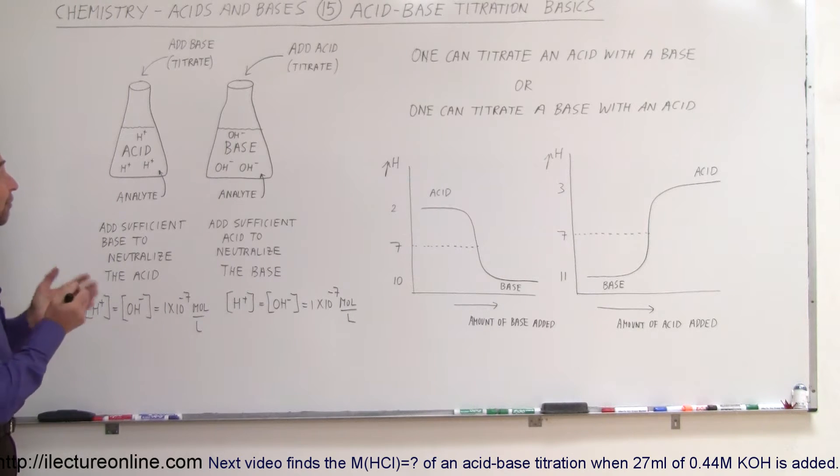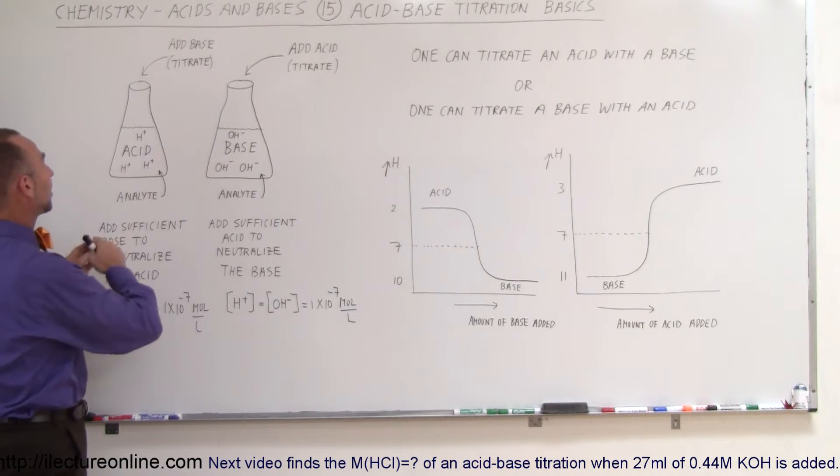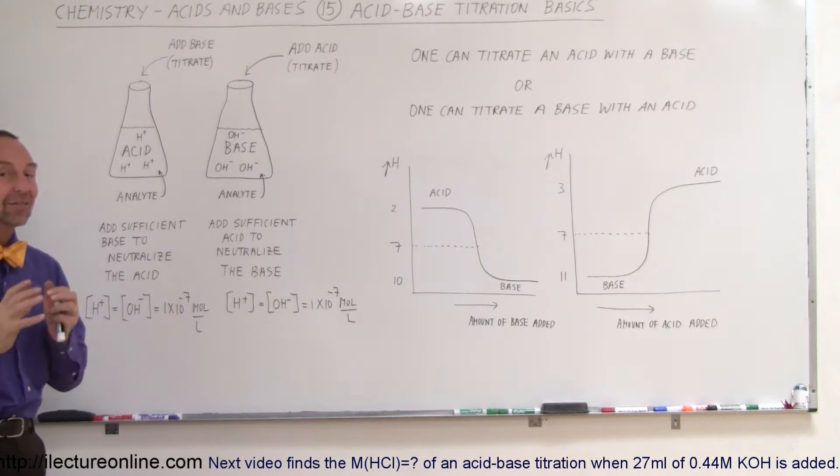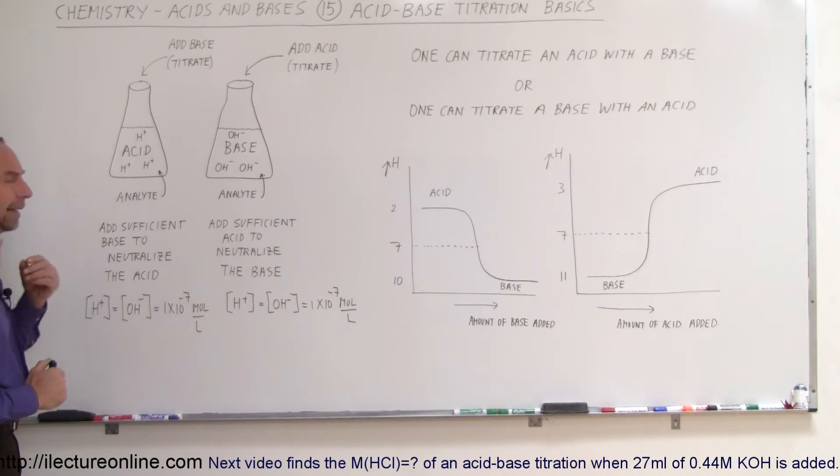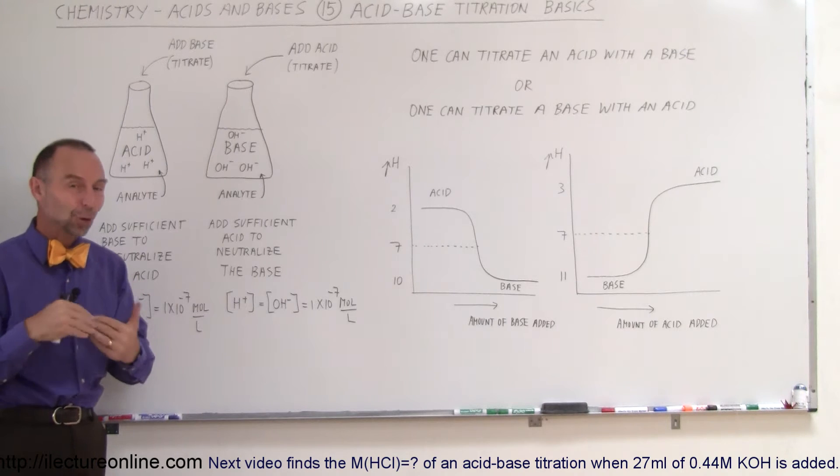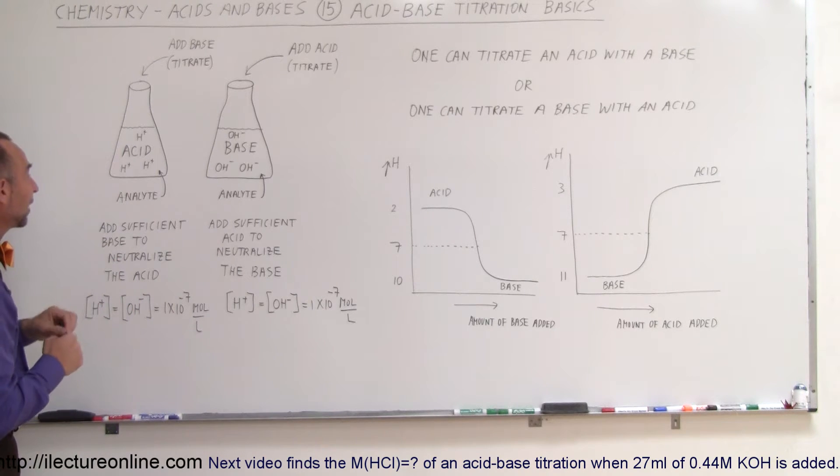What we have, for example, is a flask here with some acid in it. When it's an acid, it has an excess of hydrogen ions. In actuality, it has an excess of hydronium ions, but for simplicity, we'll just write it as hydrogen ions.